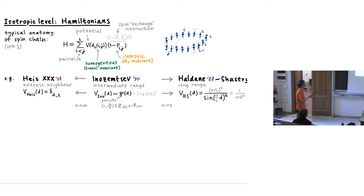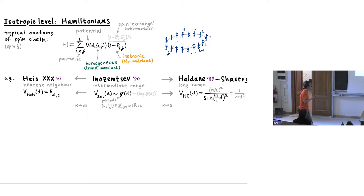These spin chains are isotropic, commuting with SL(2) or SU(2), because of the structure of the spin interactions. They're also homogeneous because the potential depends only on the distance between i and j along the circle — the distance on Z modulo LZ — making them translation invariant. So there's an action of translations commuting with these Hamiltonians.